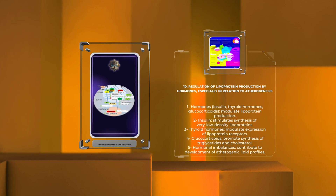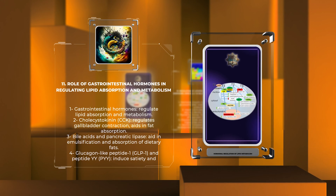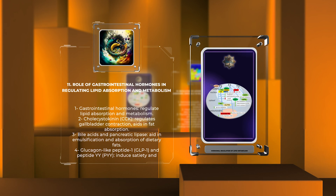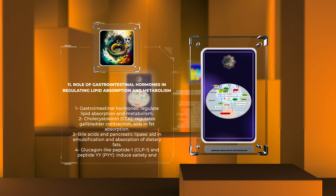Role of gastrointestinal hormones in regulating lipid absorption and metabolism. Now let's focus on the role of gastrointestinal hormones in regulating lipid absorption and metabolism. These gut hormones play a fundamental role in signaling satiety, nutrient absorption, and energy homeostasis. Cholecystokinin, CCK, released upon the ingestion of dietary fats, regulates gallbladder contraction, promoting the release of bile acids and pancreatic enzymes. Bile acids aid in the emulsification and absorption of dietary fats, while pancreatic lipase breaks down triglycerides into fatty acids and glycerol for absorption. Additionally, glucagon-like peptide 1, GLP-1, and peptide YY, PYY, act on the brain to induce satiety, reduce appetite, and delay gastric emptying, ultimately impacting lipid absorption and metabolism.